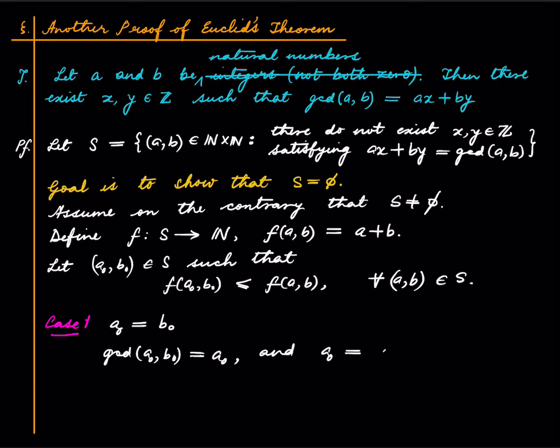And of course A0 is nothing but A0 times one plus B0 times zero. So we see that actually this pair A0 comma B0 is not lying in S, but it was a member of S which achieved the minimum value for F. So in particular it is a member of S and this is a contradiction. This says that this is not a member of S and this says that this is a member of S, so this is a contradiction and therefore case one cannot happen.